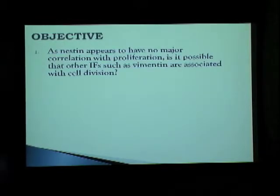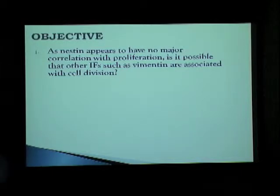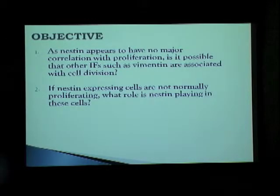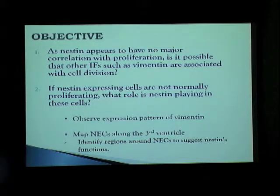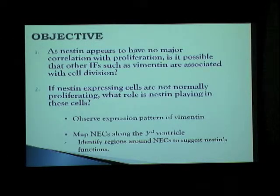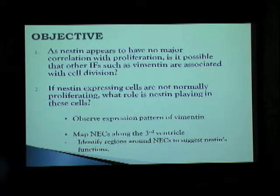Given the necessary background, I'd like to state my objectives. My project was a two-fold approach. Firstly, as nestin appears to have no major correlation with proliferation, is it possible that other intermediate filaments such as vimentin are associated with cell division? And secondly, if nestin-expressing cells are not normally proliferating, then what are they doing? And why is nestin present in the third ventricle in the first place? To go about my project, I observed the expression pattern of vimentin, and I also mapped nestin-expressing cells along the third ventricle to identify regions around the nestin-expressing cells to suggest nestin functions.